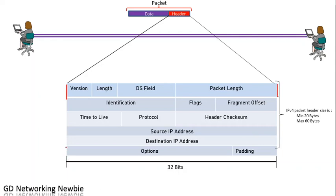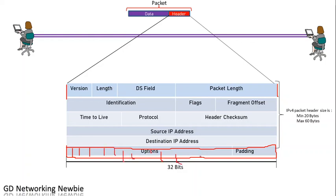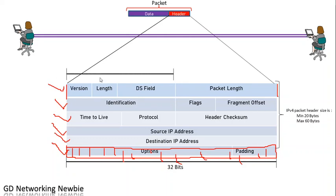Each full row contains 32 bits — counting from 1 through 32. Likewise, each row in the header is 32 bits wide. Some fields are shorter: from the midpoint to one end there are 16 bits, from a quarter point there are 8 bits, and some fields are just 4 bits. This is how different numbers of bits are assigned to different fields.